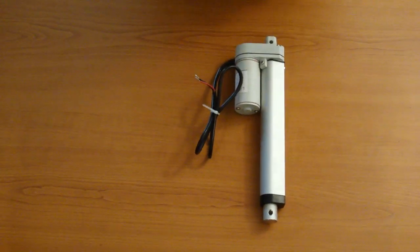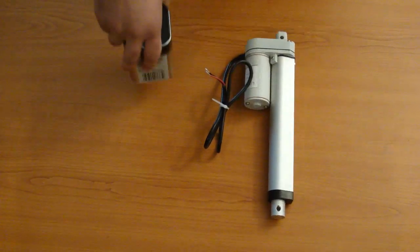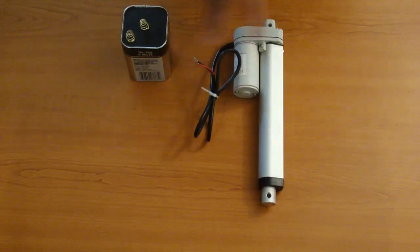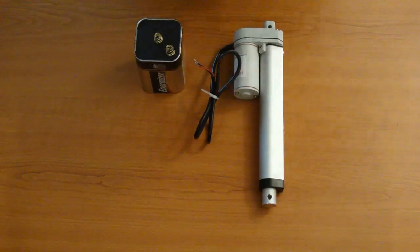What we're going to use here for the example just to show you how it works is a simple 6 volt battery. Although these are 12 volt actuators, the 6 volt battery will do our example just fine.